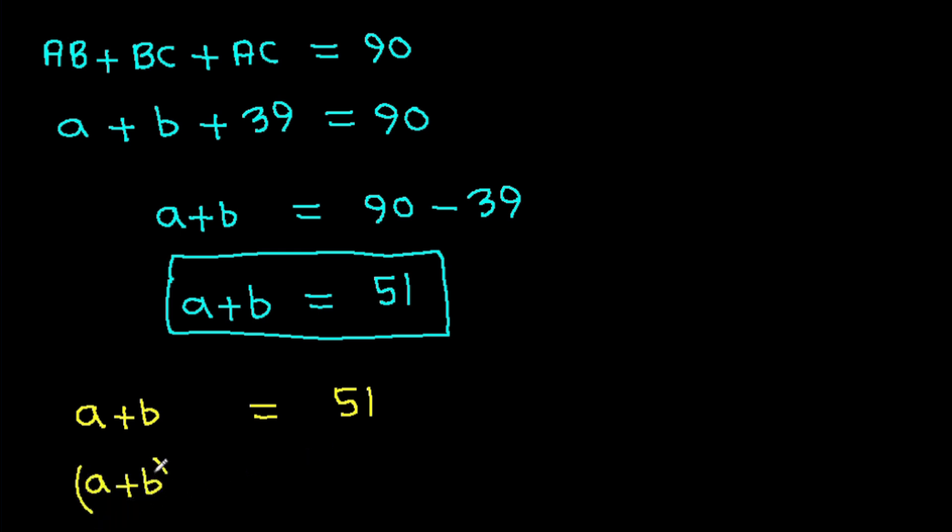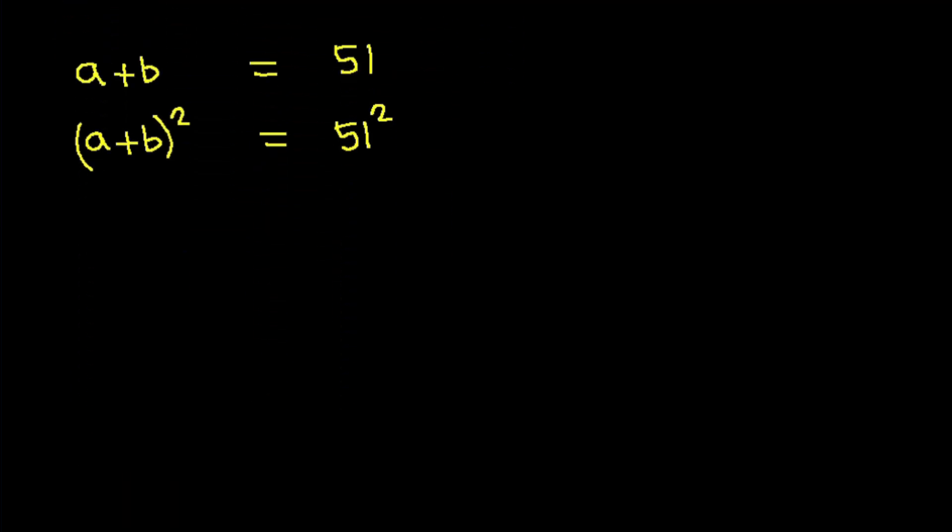So a plus b squared will be 51 squared, and it is a squared plus b squared plus 2ab equals 51 squared.